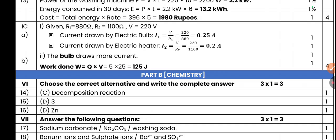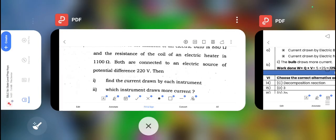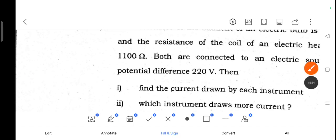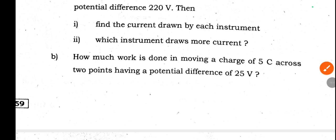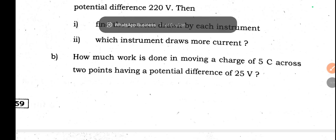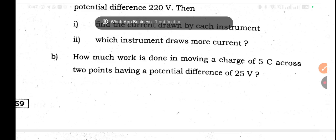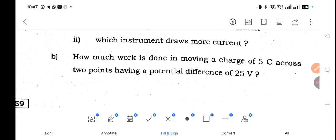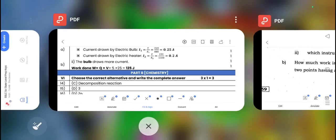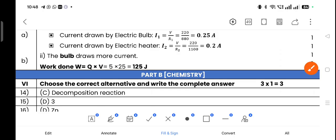How much work is done in moving charge of 5 coulomb across two points having potential difference of 25 volt? Work done W = Q × V = 5 × 25 = 125 joules.